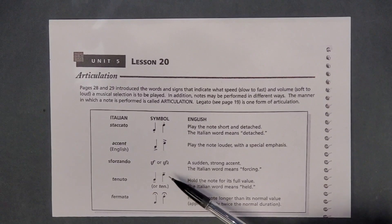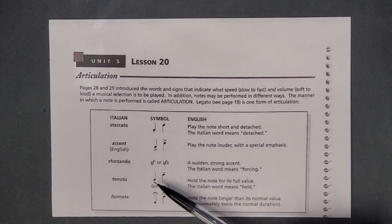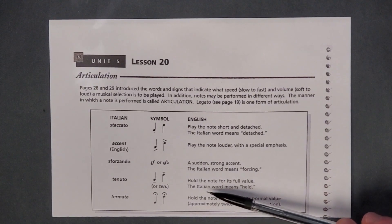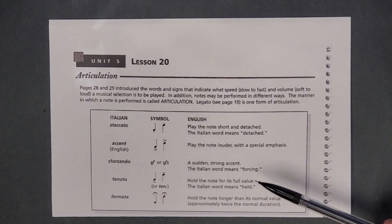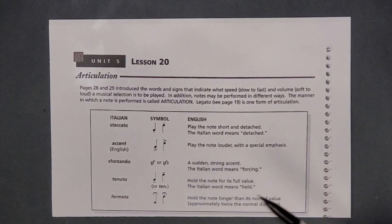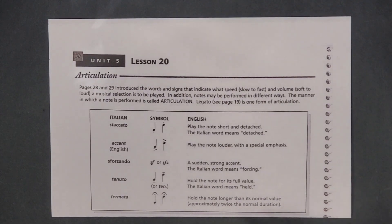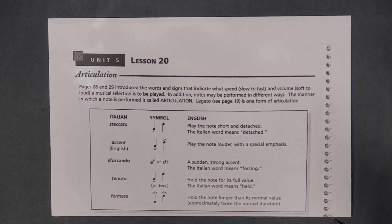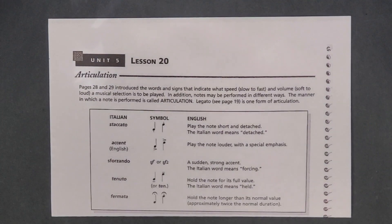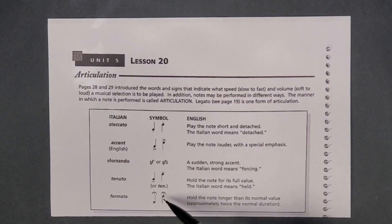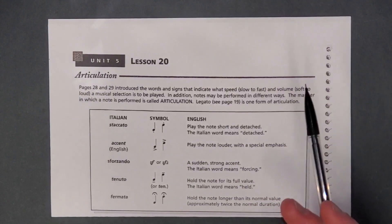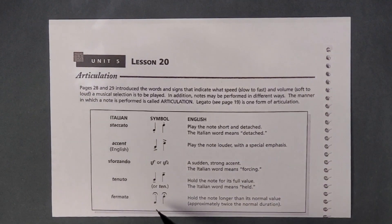Tenuto looks like a little hyphen or underscore, either above or below the note — hold the note for its full value; the Italian word means held. Fermata looks like a bird's eye, which is one of the common ways it's referred to. It means to hold the note longer than its normal value, approximately twice the normal duration. Usually fermatas are not necessarily exactly twice — it's whatever the director decides. You'll see fermatas most commonly at the end of music or during major transitions in the middle of a piece.